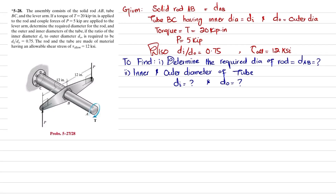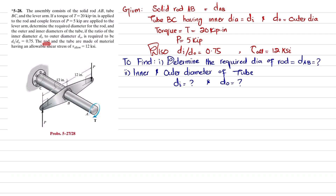Welcome back. Problem 5-28. The assembly consists of solid rod AB, tube BC, and lever arm. A torque of 20 kip·inches is applied to the rod, and couple forces of 5 kips are applied to the lever arm. Determine the required diameter for the rod, and the outer and inner diameter of the tube, if the ratio of inner diameter to outer diameter is 0.75. The rod and tube are made of material having allowable shear stress of 12 ksi.